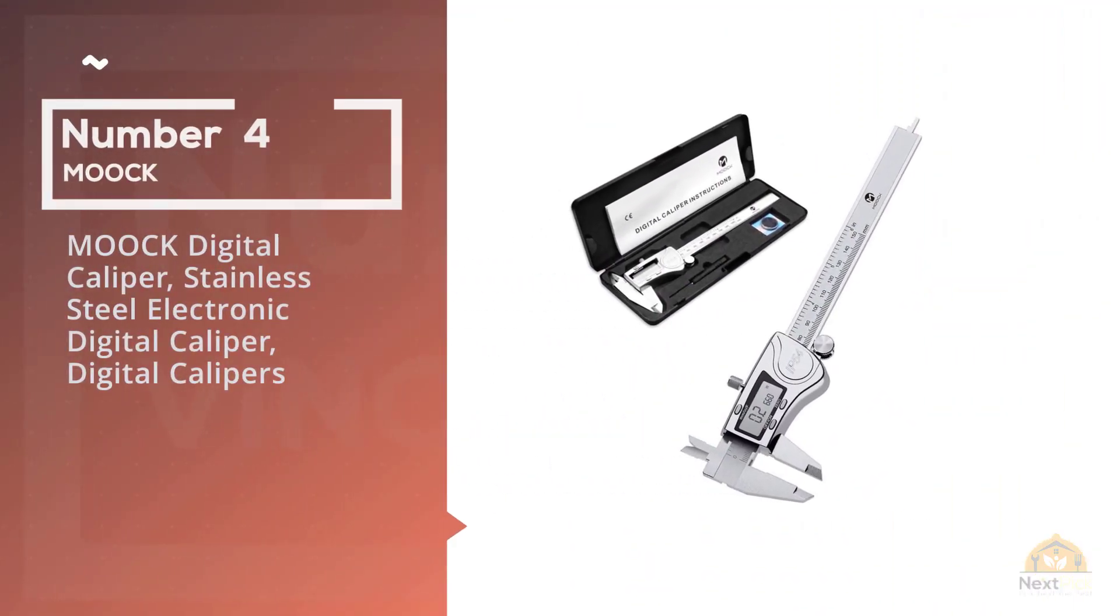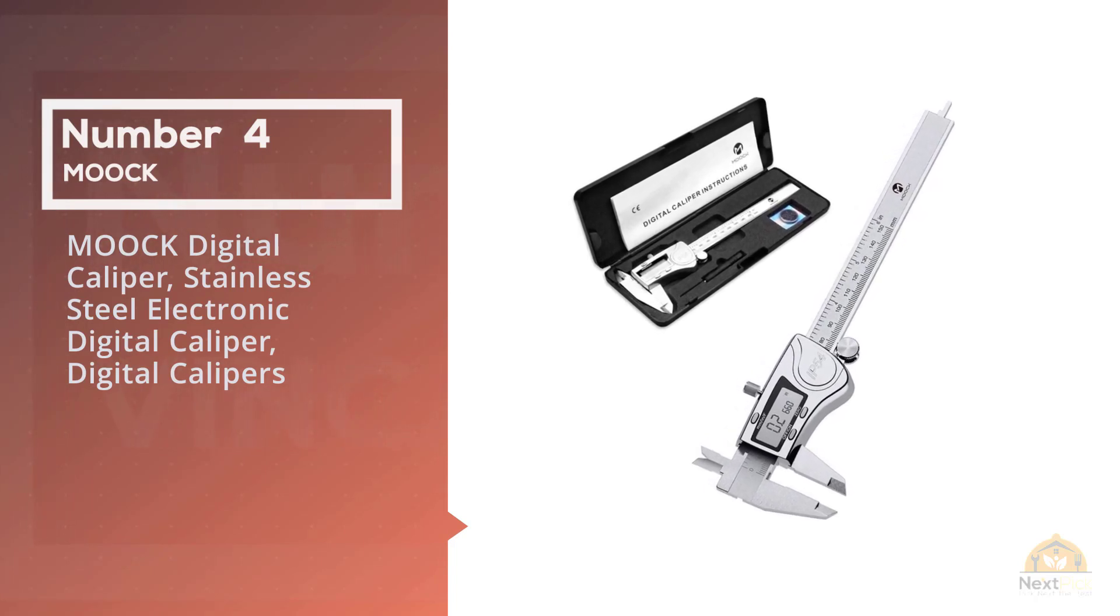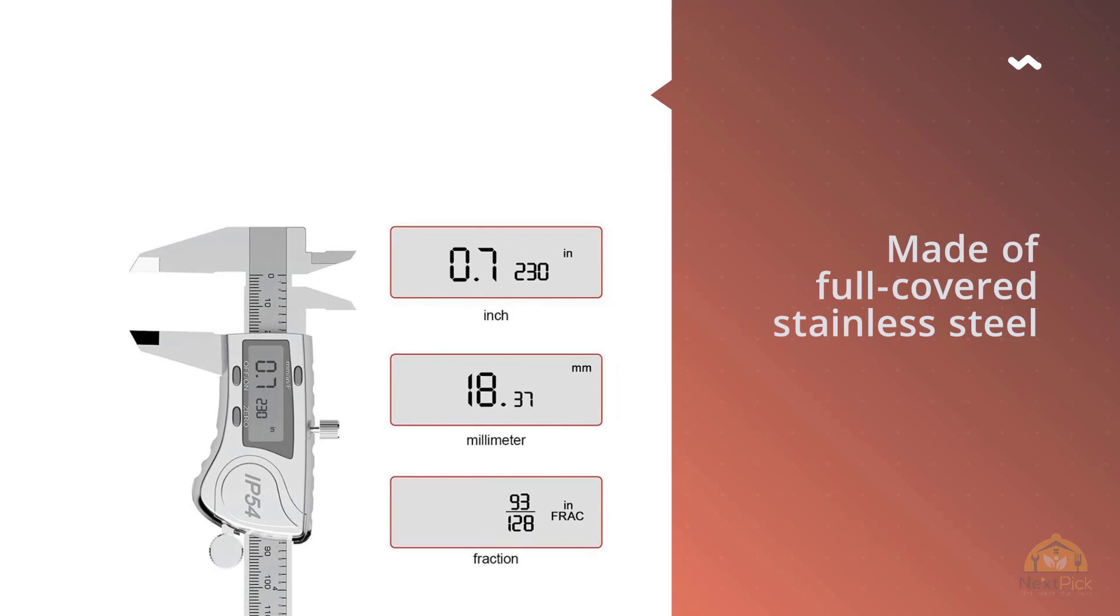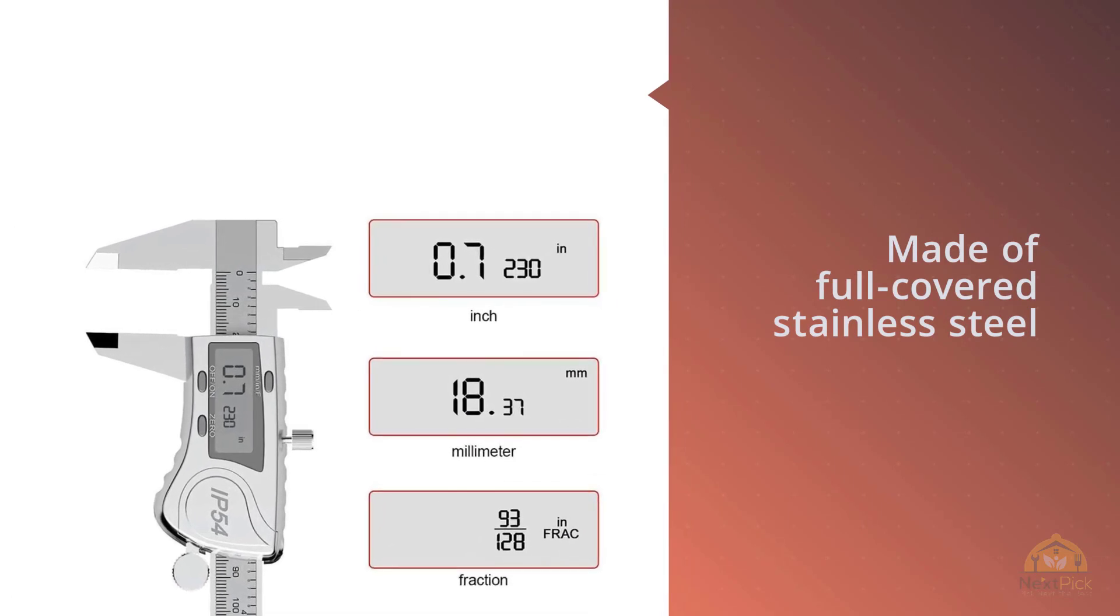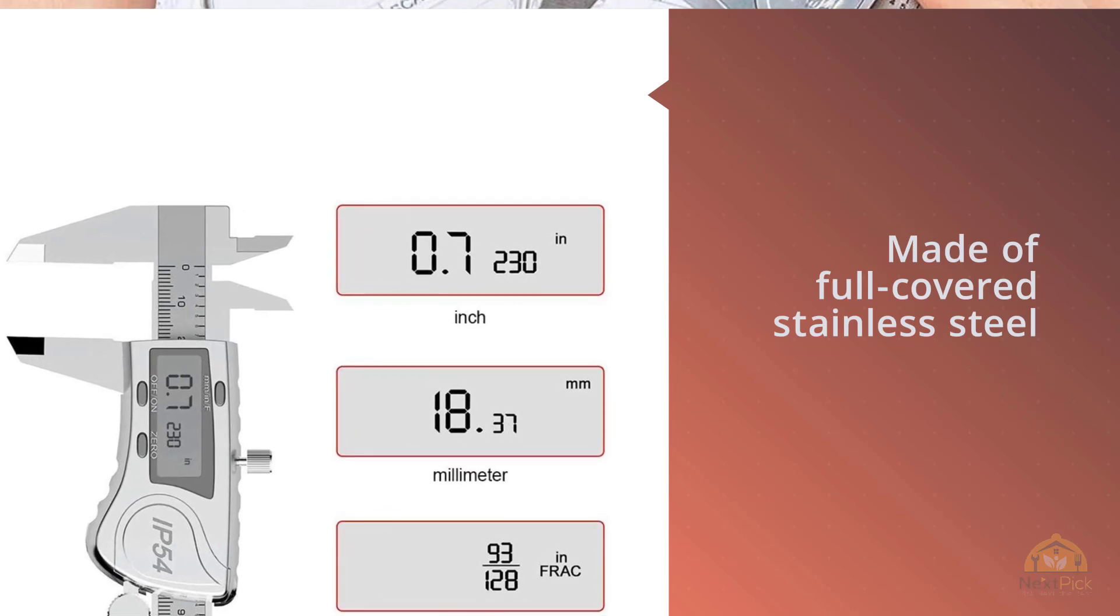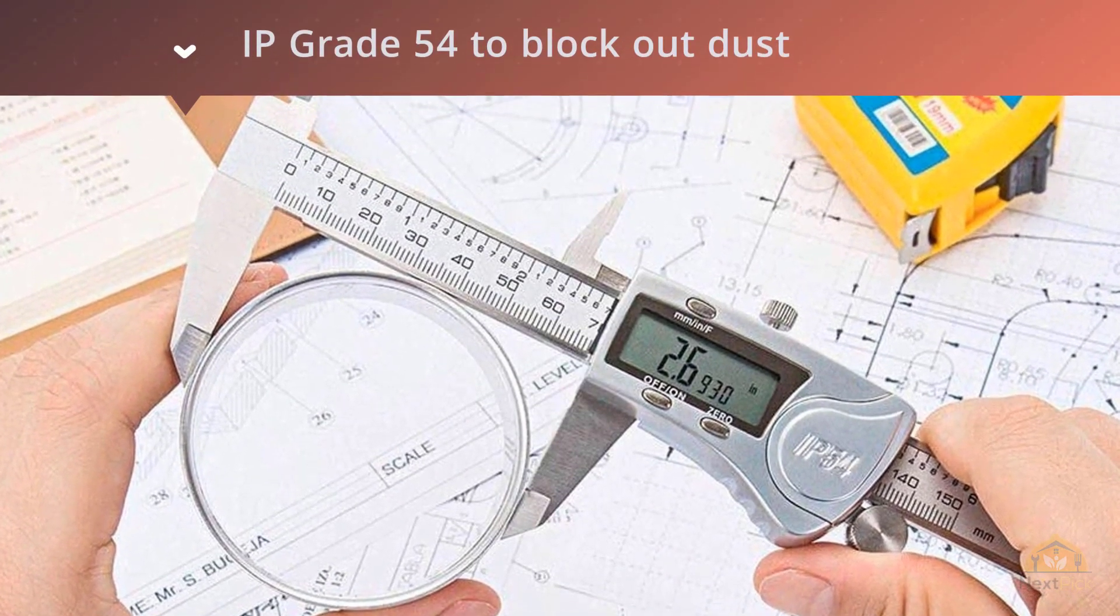Number four: Mouc Digital Caliper Stainless Steel Electronic Digital Caliper. Six inch caliper is made of full covered stainless steel that glides along the beam with depth measurement probe and precision ground jaws. IP grade 54 to block out dust, insects and water that may otherwise affect the accuracy of the caliber.